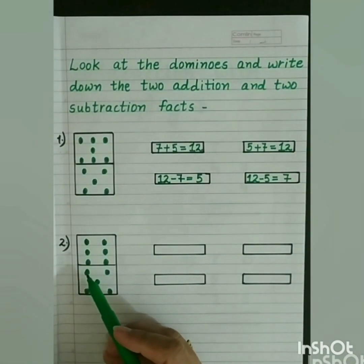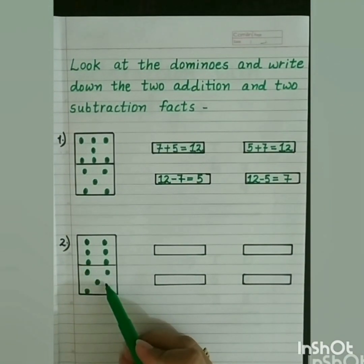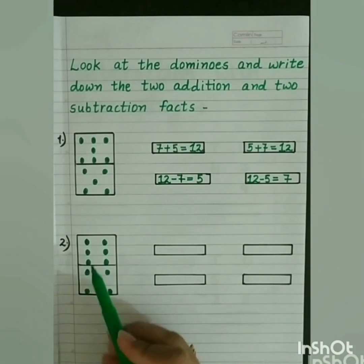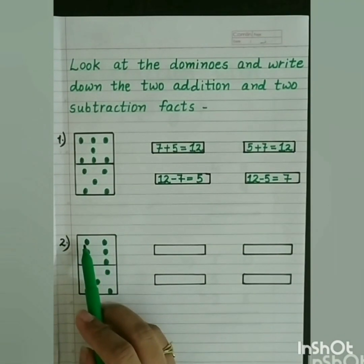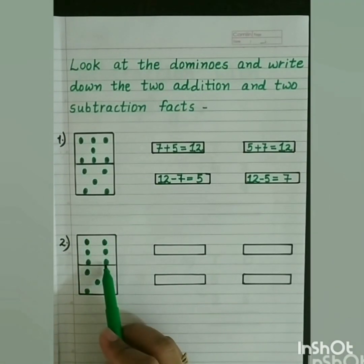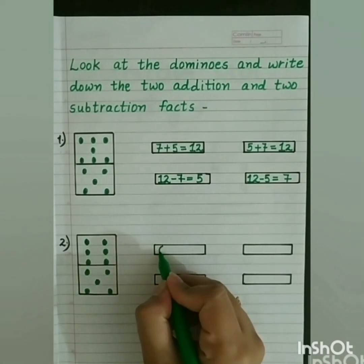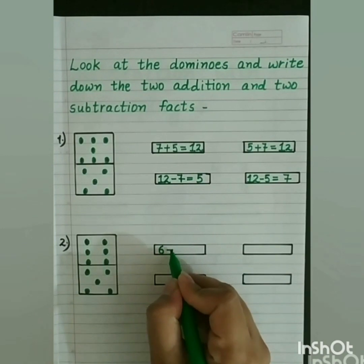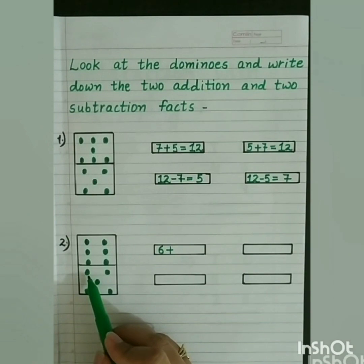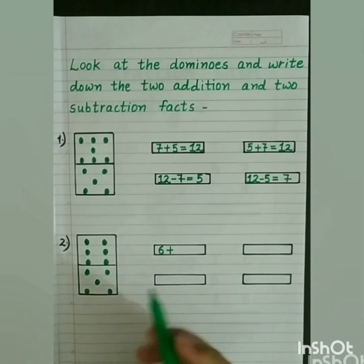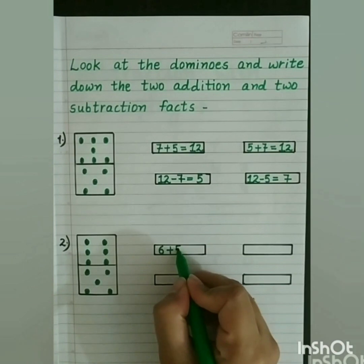See one more example. Look at this domino. We count the dots in the first part: 1, 2, 3, 4, 5, 6. So we write 6. Now we count the dots in the other part: 1, 2, 3, 4, 5. So we write 5.